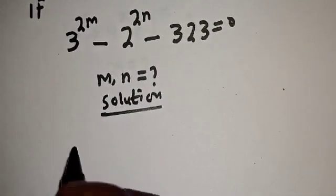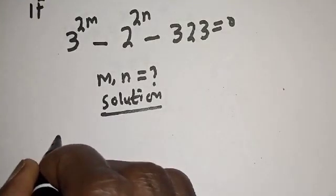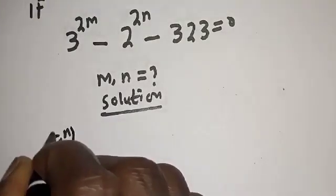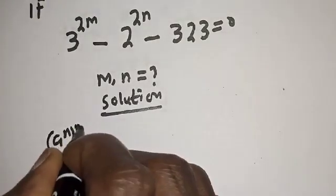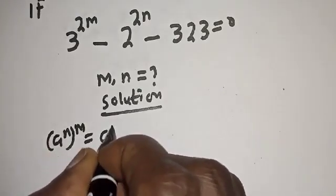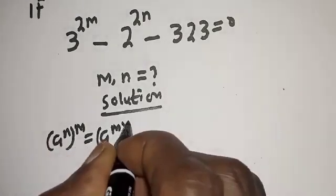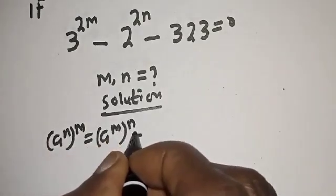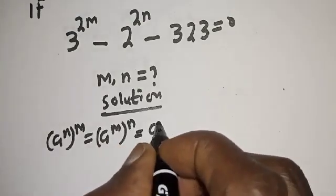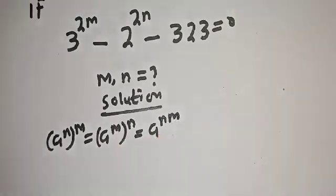Take note of this exponential rule: a raised to power n to the power of m is equal to a raised to power m to the power of n, which is equal to a raised to power nm.